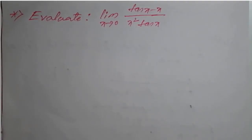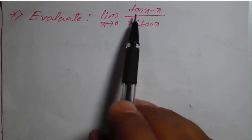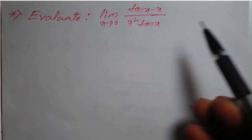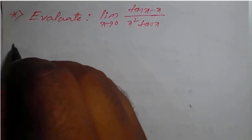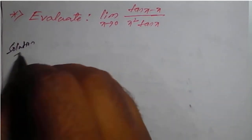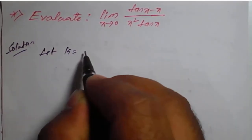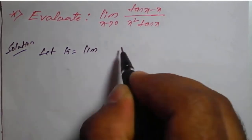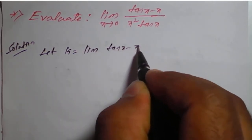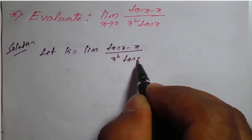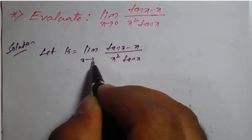Hello students. We will see a problem based on limits. The problem is: evaluate the limit of tan x minus x divided by x squared times tan x, as x tends to 0. Let k equal to limit of tan x minus x divided by x squared into tan x as x tends to 0.